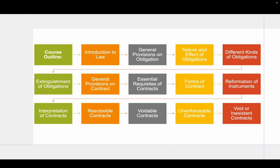This is our course outline. We will start with the introduction to law, which will be our lesson for today. Then we will proceed to general provisions and obligation, nature and effects of obligations, different kinds of obligations, extinguishment of obligations, general provisions on contracts, essential requisites of a contract, forms of contract, reformation of instruments, interpretation of contracts, rescissible contracts, voidable contracts, unenforceable contracts, and void or inexistent contracts.